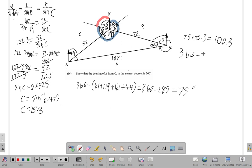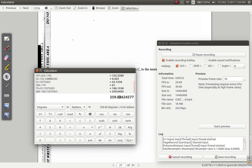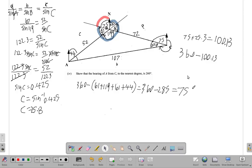360 minus 100.13 something. I want all the figures to get it very accurate. So 360 minus that equals 259.84, not perfectly accurate but because of some rounding off. 259.84.